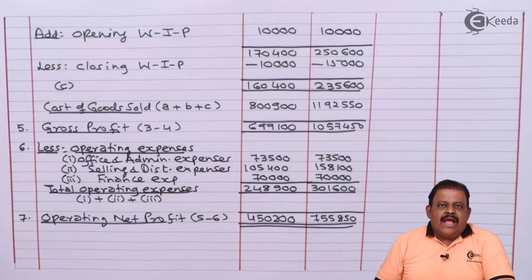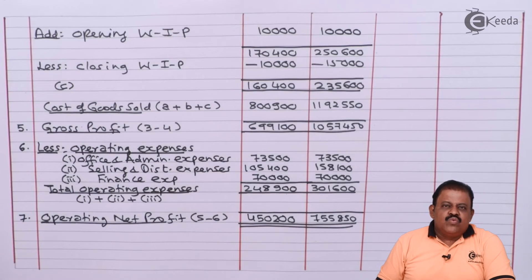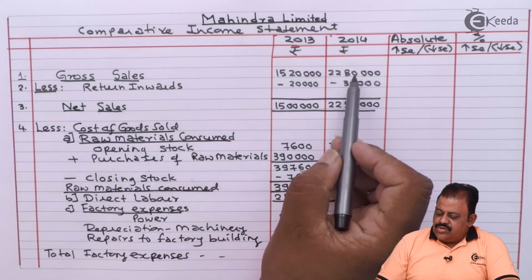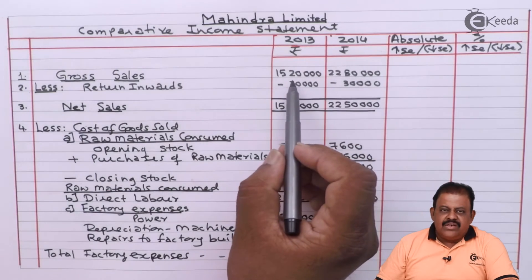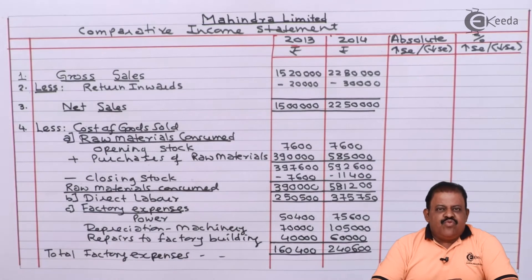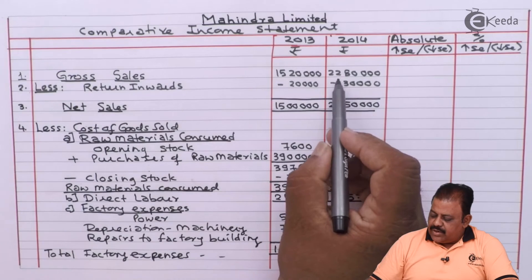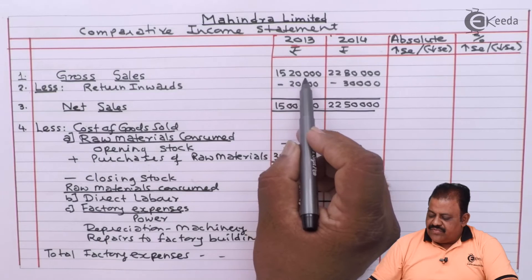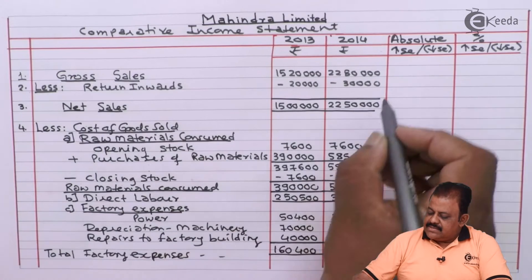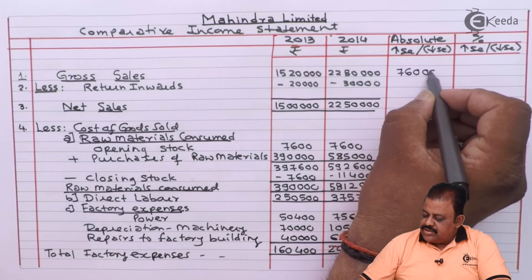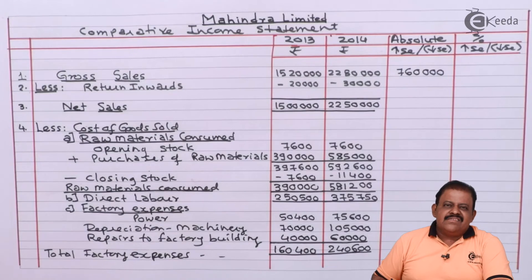Now let us find the absolute increase or decrease between the two years. The formula is: value in second column minus value in first column. If we get a positive number it is an increase; if negative, it is a decrease. For example, gross sales: 22 lakh 80,000 minus 15 lakh 20,000 equals 7 lakh 60,000 — a positive figure, indicating an increase.